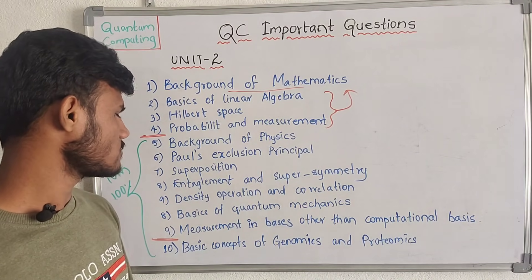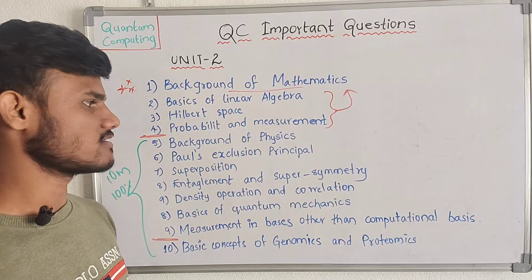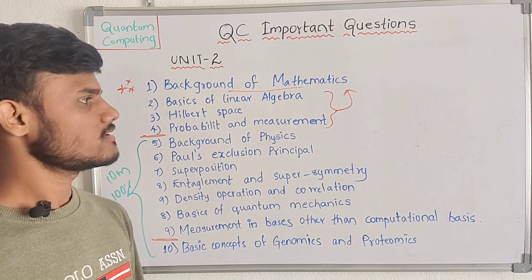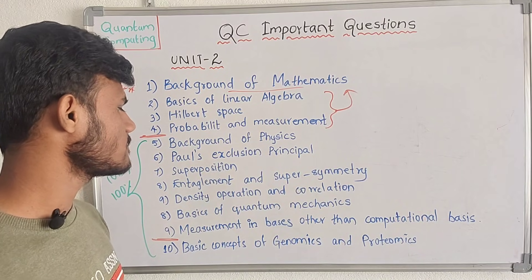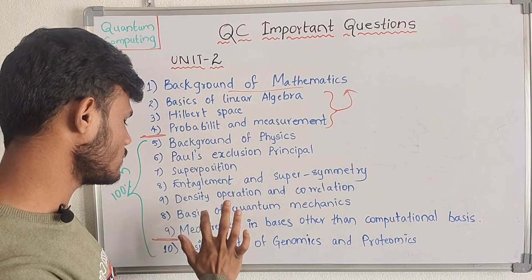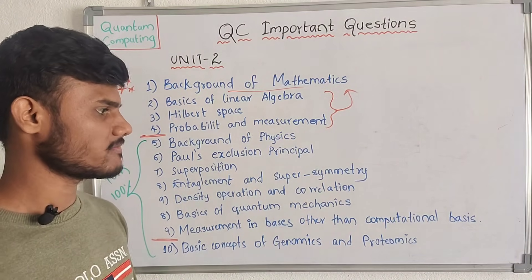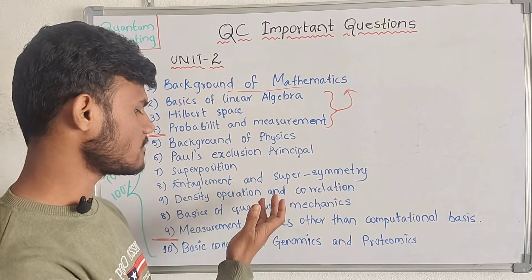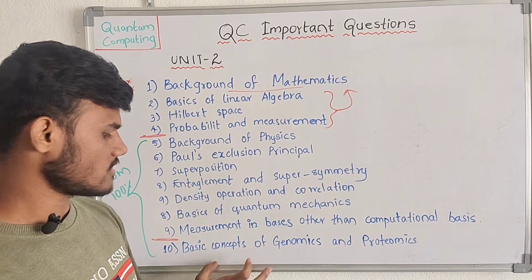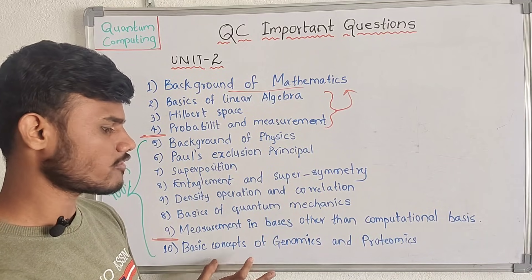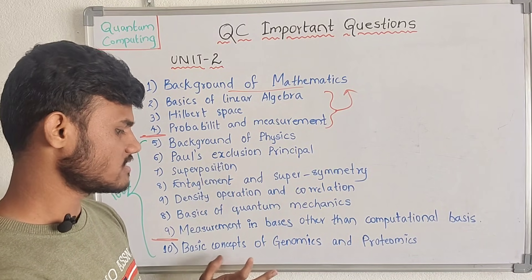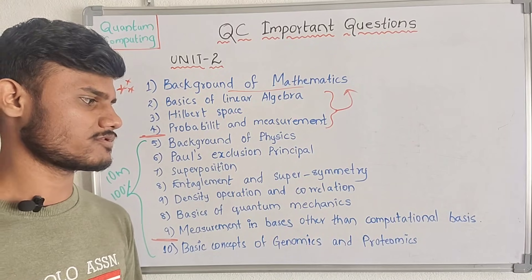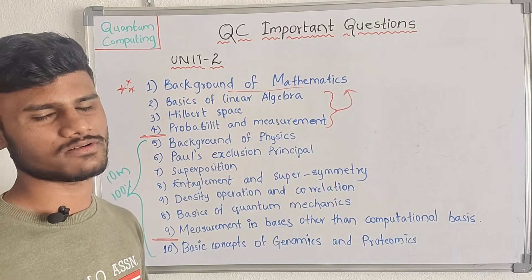In the background of physics, there are 6 topics. The last thing in this unit is the background of biology — basic concepts of genomics and proteomics. Genomics and proteomics are two key concepts. If you study this, it will be easier.